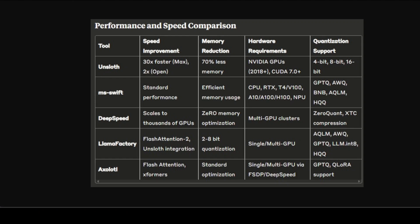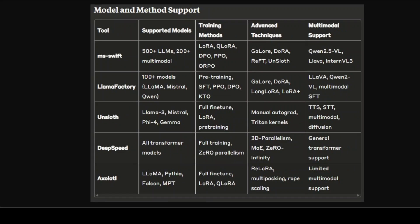First, looking at performance and speed analysis: when examining raw performance metrics, Unsloth clearly dominates with its 30x speed improvement in the max offering and 2x improvement in the open-source version, coupled with dramatic 70% memory reduction. This advantage comes from their manual autograd engine and custom Triton kernels that optimize matrix operations at the lowest level. DeepSpeed takes a different approach, focusing on massive scalability rather than single-GPU optimization, enabling training across thousands of GPUs with their ZeRO memory optimization techniques. MS Swift, LLaMA Factory, and Axolotl offer more balanced performance with quantization options ranging from 2-bit to 16-bit, making them suitable for different hardware constraints from RTX cards to high-end data center GPUs.